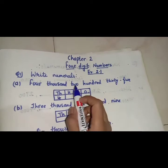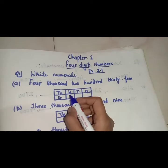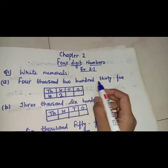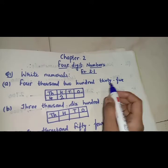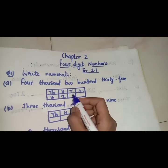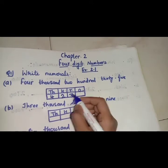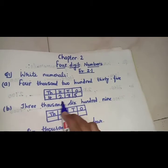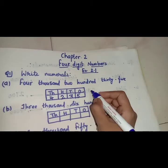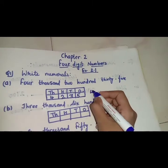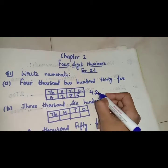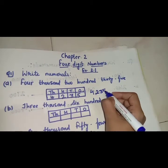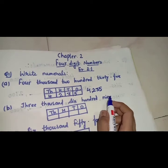200 means 2 is at the hundreds place, so we will write 2 here. 35 means 3 is at the tens place and 5 is at the ones place. So here we have the numeral form of this number: 4,235.